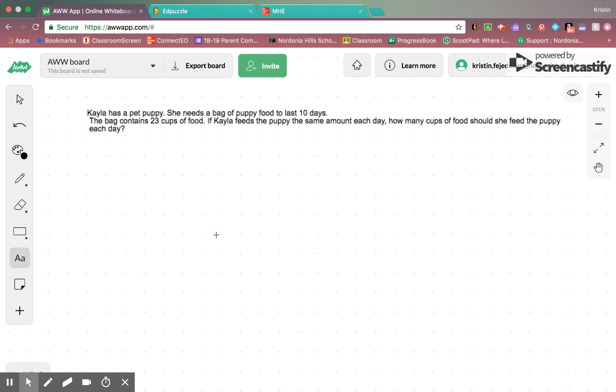First of all, remember that our dividend is our first number in a number sentence, and it is what we are splitting. So, in this case here, we are splitting 23 cups of food, and it has to last 10 days. So, our 10 days is actually going to be our divisor, which is the second number in the number model. So, if we are looking at our number model, it would be 23 divided by, because we are splitting the food, remember splitting means that we are dividing or sharing the food equally, with 10 days.